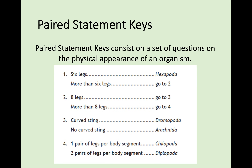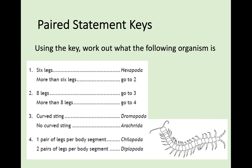Here is a past paper question where you're given a set of questions on the physical appearance of an unnamed organism and must use a paired statement key to identify it. The unnamed organism is a chilopoda. The first question shows it clearly has more than six legs, so you go to question two. It still has more than eight legs, so you go to question four. There, choosing between one pair or two pairs of legs per body segment, you can see one pair per segment — so it must be chilopoda.